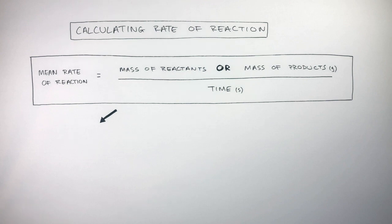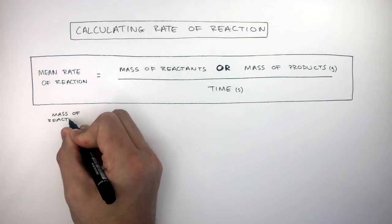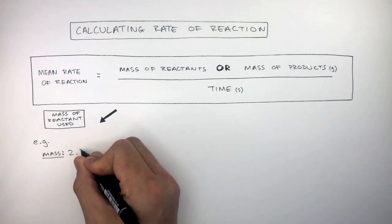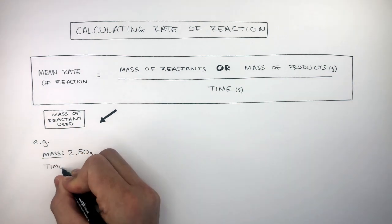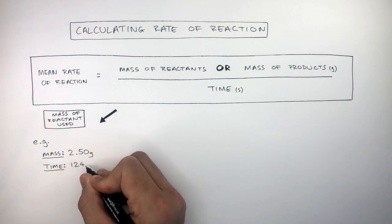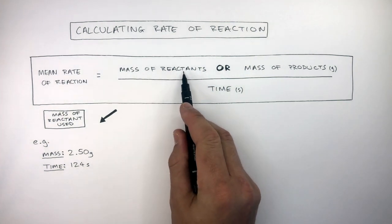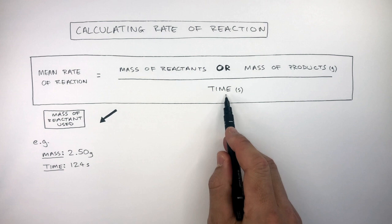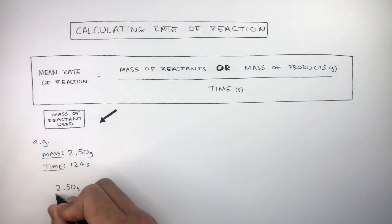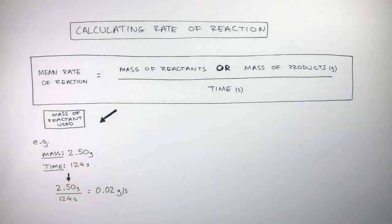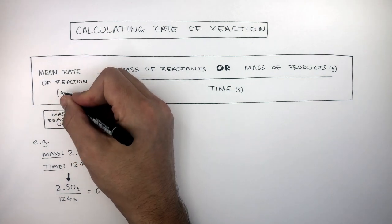Let's go through an example where it's the mass of reactant used. For example, if the mass is 2.5 grams and the time is 124 seconds, as the equation says, mass of reactants divided by time, you do 2.5 divided by 124. This equals 0.02 grams per second. The unit of rate of reaction is grams per second.